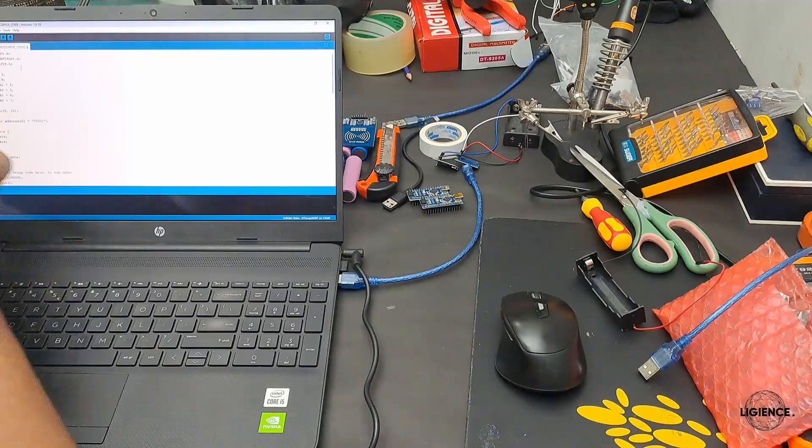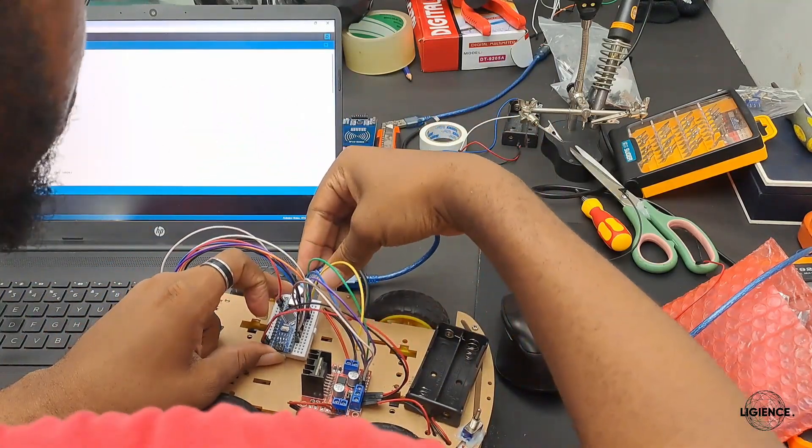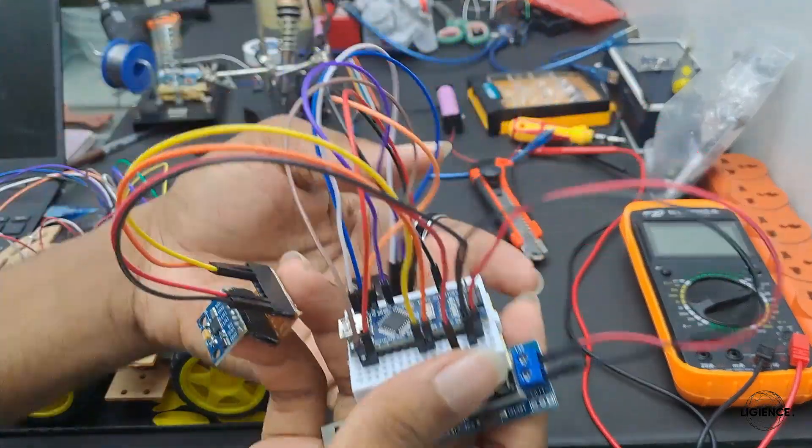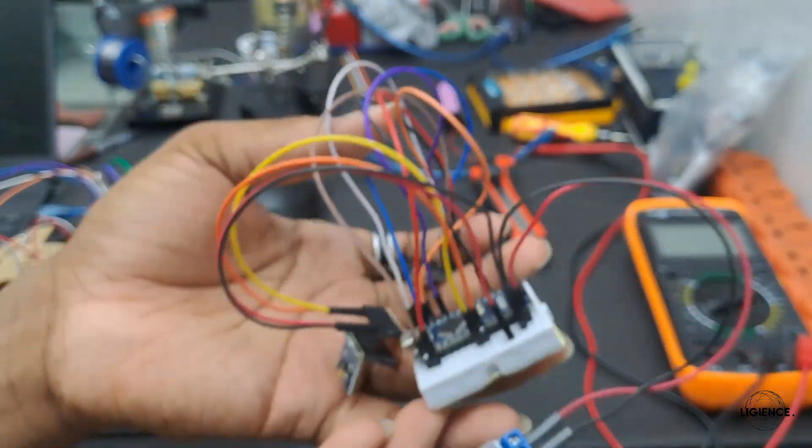Now came the problem of getting the transmitter and receiver to work. I uploaded the sample code to send simple text and it just wasn't working. After some more testing without the transceiver mount, I found out one of my transceivers was a dud, so I replaced that. Then tried it with the mounts and it still wasn't working.